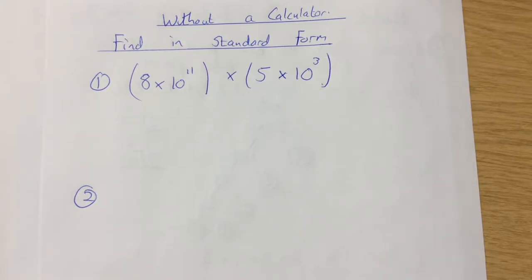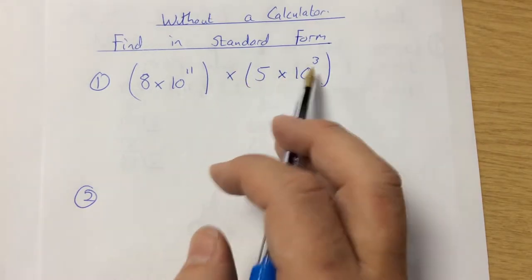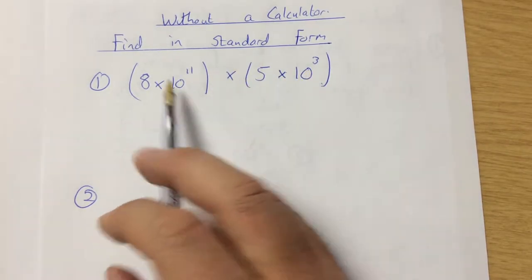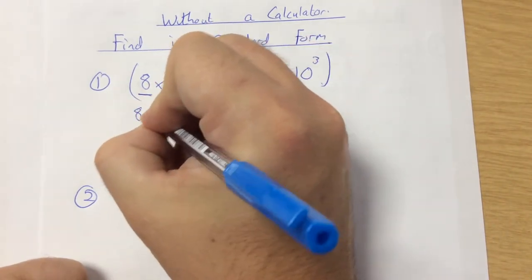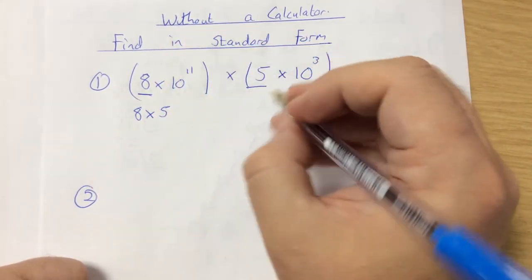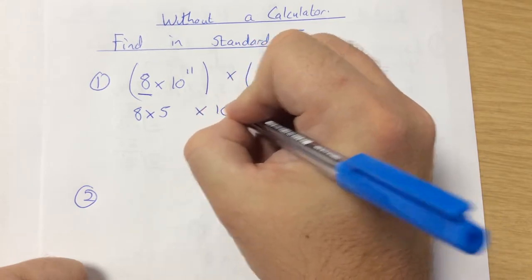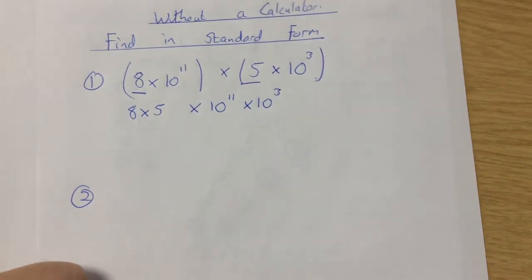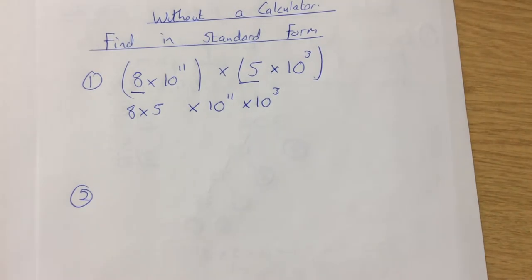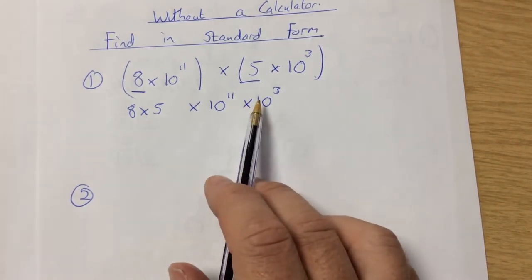When you're working out big questions like 8 times 10 to the 11 multiplied by 5 times 10 to the 3, what I would do is work out the 8 times 5 bit first, and then I've also still got the 10 to the 11 times 10 to the 3. This uses the rules of multiplication and also the rules of indices.